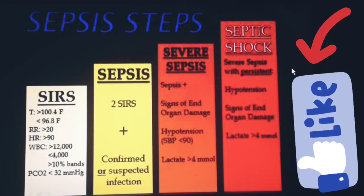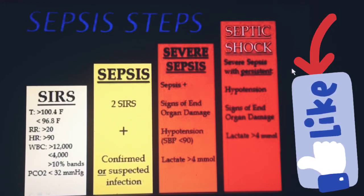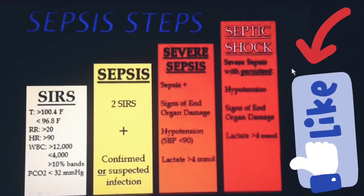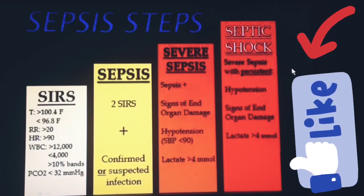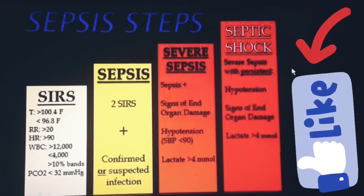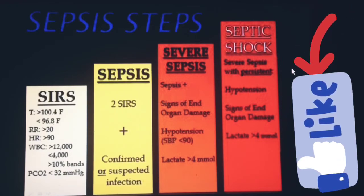If two criteria of SIRS are present along with suspected infection, it is called sepsis. In severe sepsis, there is endothelial damage along with hypotension, indicated by blood pressure less than 90 mmHg and lactate level more than 4 mmol/L. In septic shock, there is severe sepsis with persistent hypotension and signs of end-organ damage, with lactate level also more than 4 mmol/L.